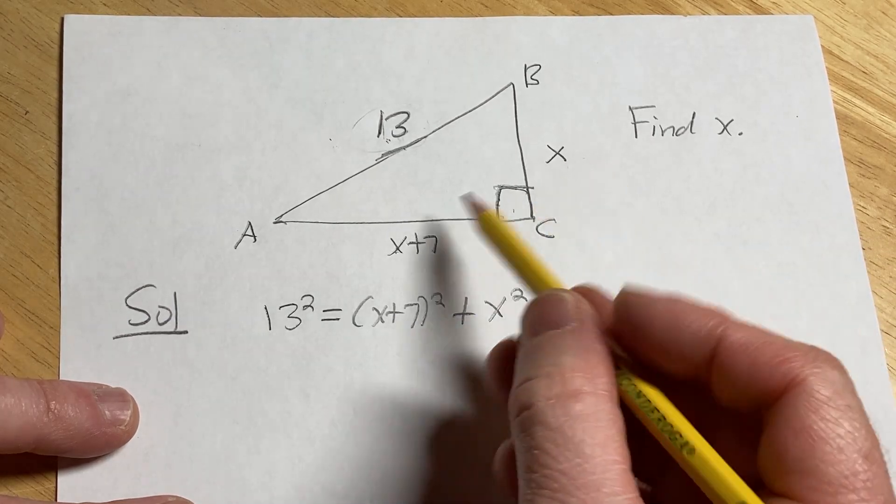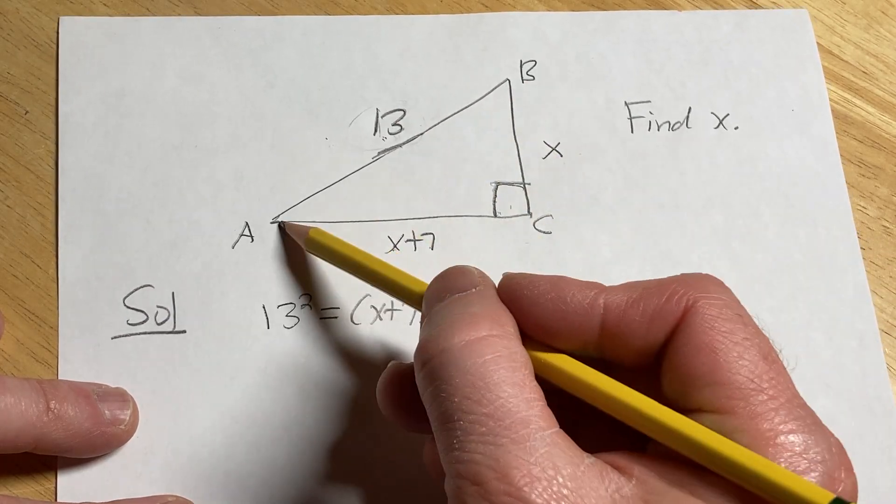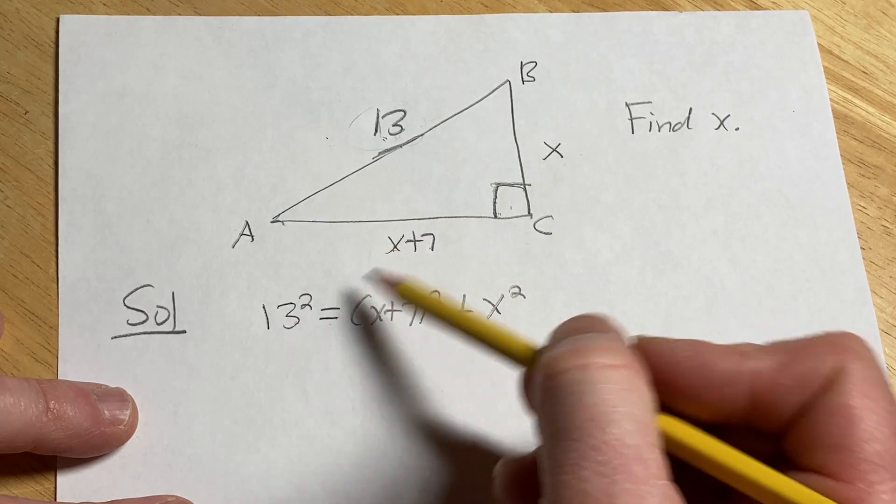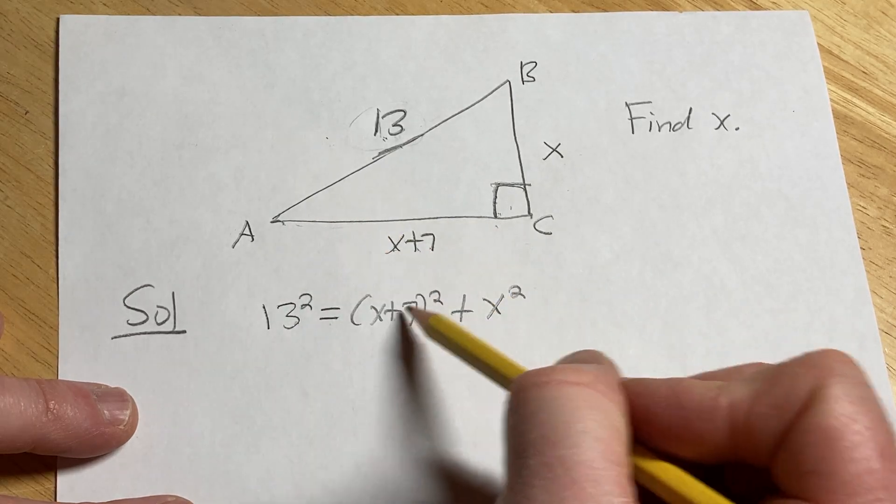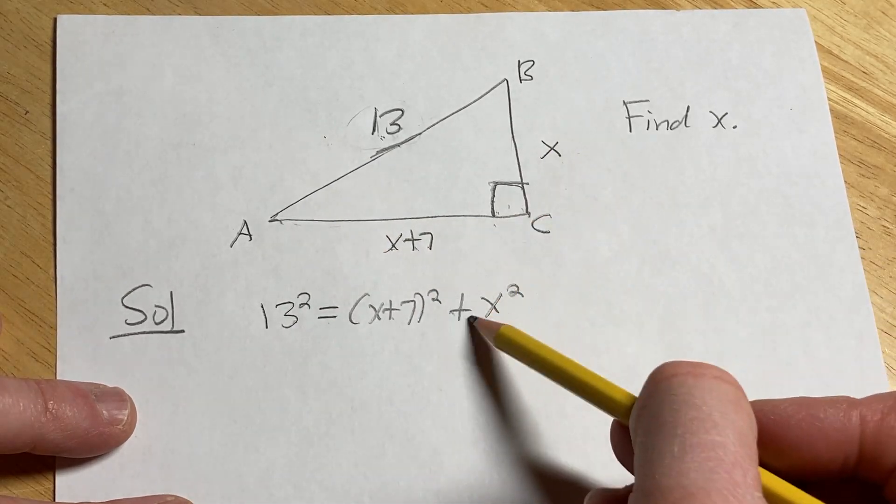And you can write it differently, it's basically the length of the hypotenuse squared is equal to the length of this side squared plus the length of this side squared.